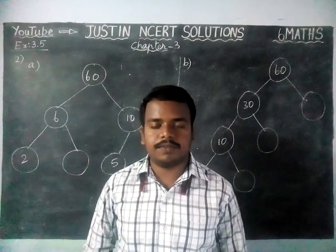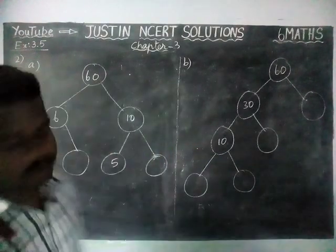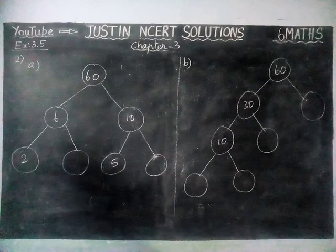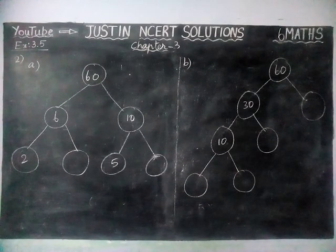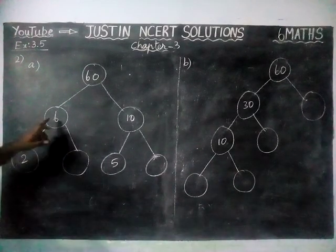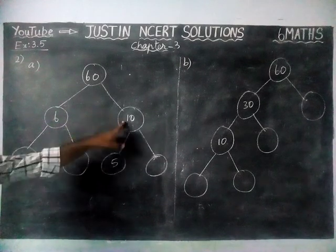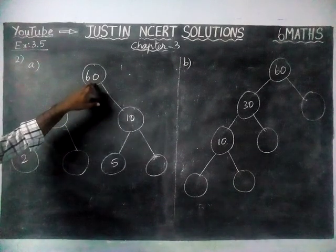We are going to find the prime factors for the given value 60. First, we are going to separate 60 into 2 numbers: 6 into 10. 6 tens are 60.